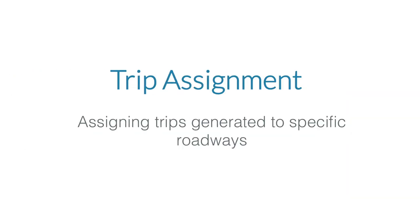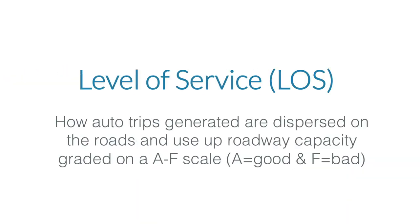Now that you understand how trips are generated, it's important to factor in how they are assigned to roadways. This is called trip assignment — simply how land uses that generate trips assign those trips to the road. Roads are pipes: pipes carry water, pipes carry people, pipes carry cars. Think of that analogy when thinking about trip assignment. Level of service is a product of trip assignment, and for cars it is really a function of how those generated and assigned trips are dispersed on roads and how they take up right-of-way and capacity.